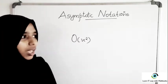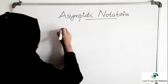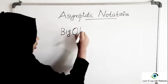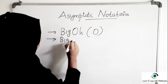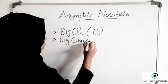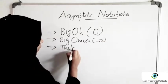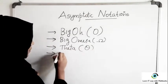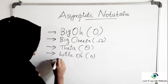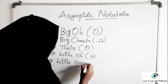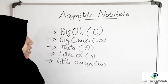The main asymptotic notations that we use are: Big O, written as the capital letter O; the second one is Big Omega, using the Omega symbol; next is Theta, denoted by the Theta symbol; then we have Little o, denoted by the small letter o; and Little Omega. These are the complexity notations we will see in this video, one by one.